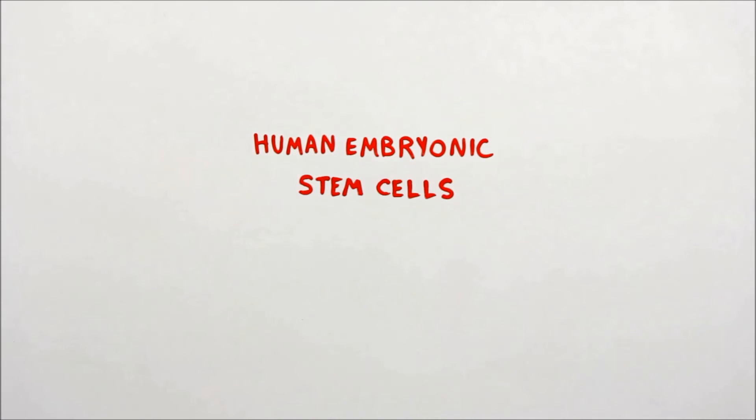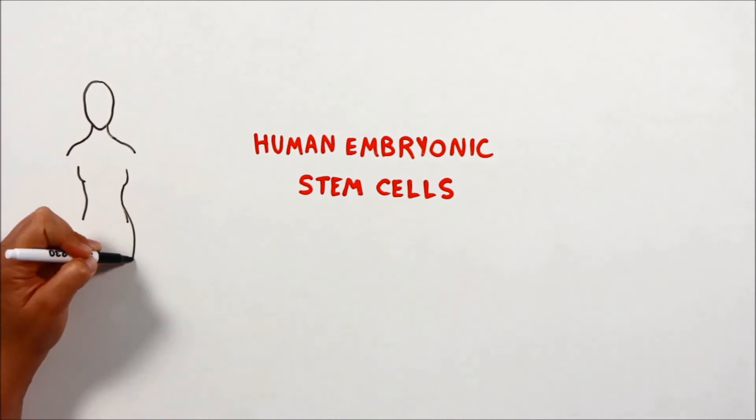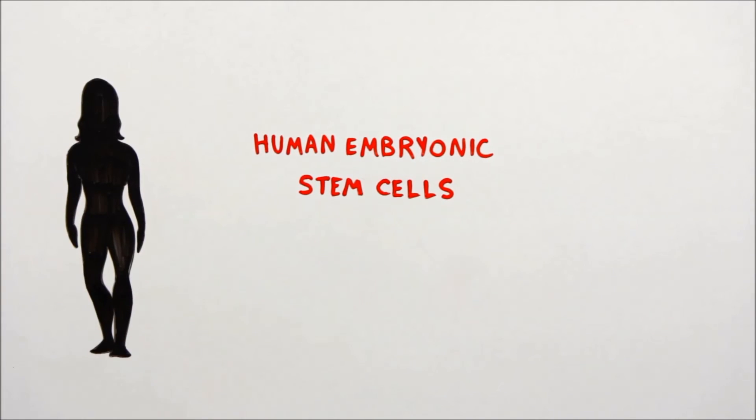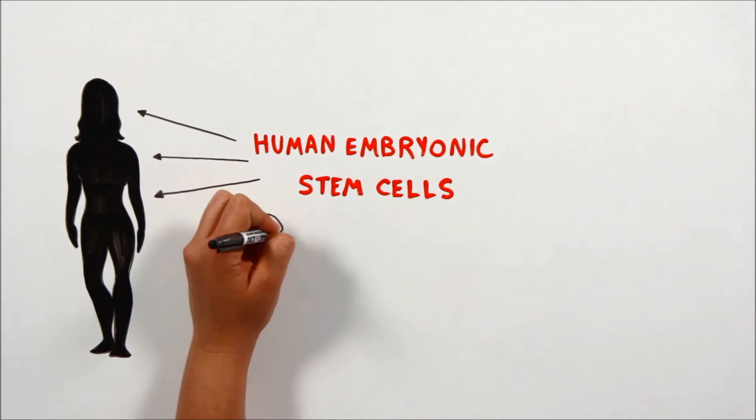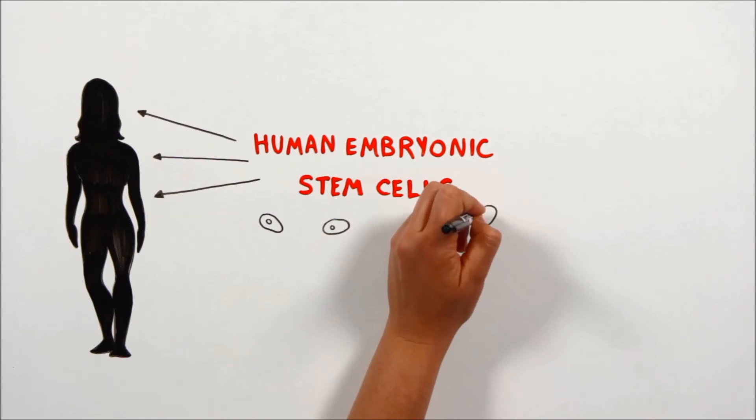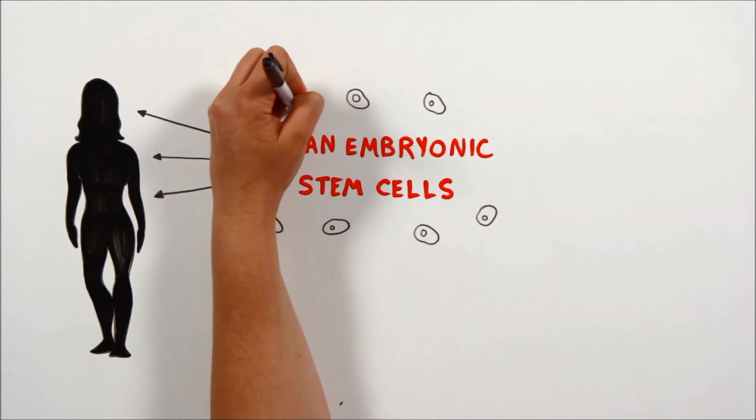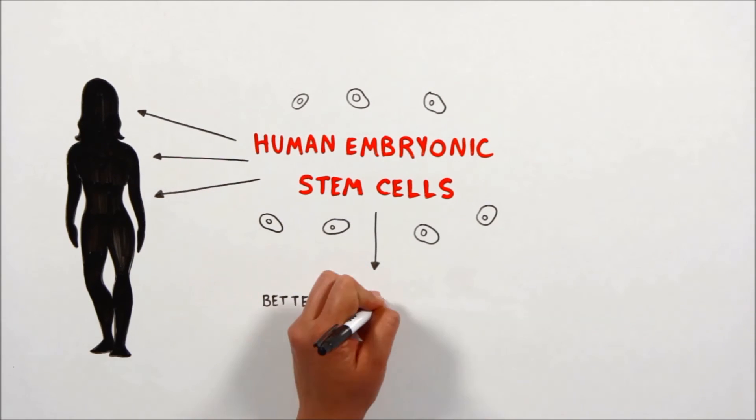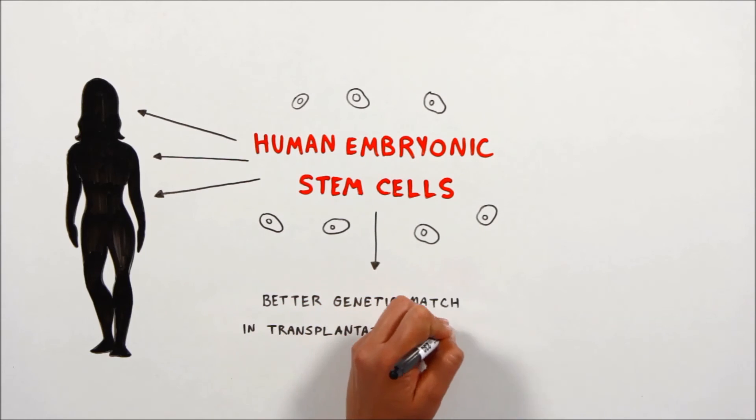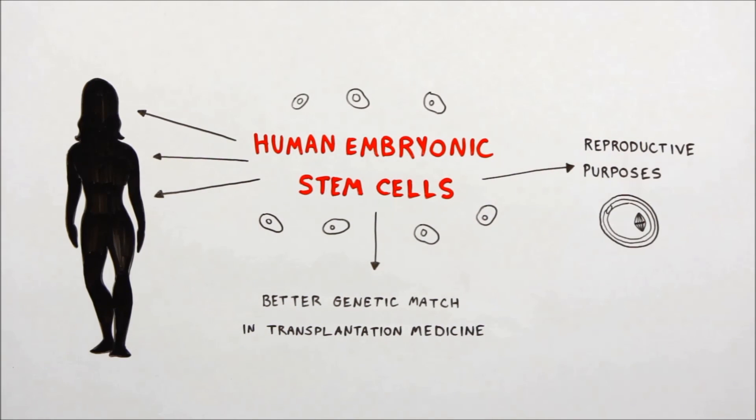Human embryonic stem cells hold an enormous promise for cell-based therapies because of their potential to make any cell in the body. Since the haploid embryonic stem cells have only half of the genetic diversity, they can serve as a better genetic match in transplantation medicine and may also be suitable for reproductive purposes.